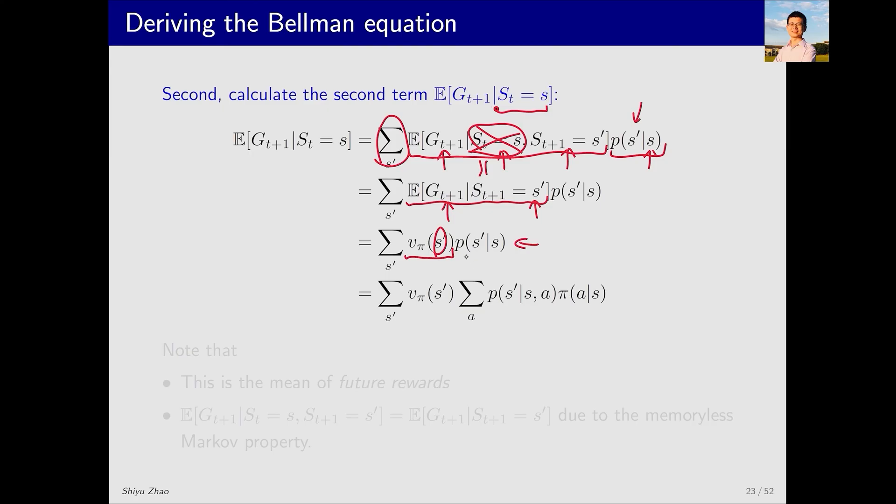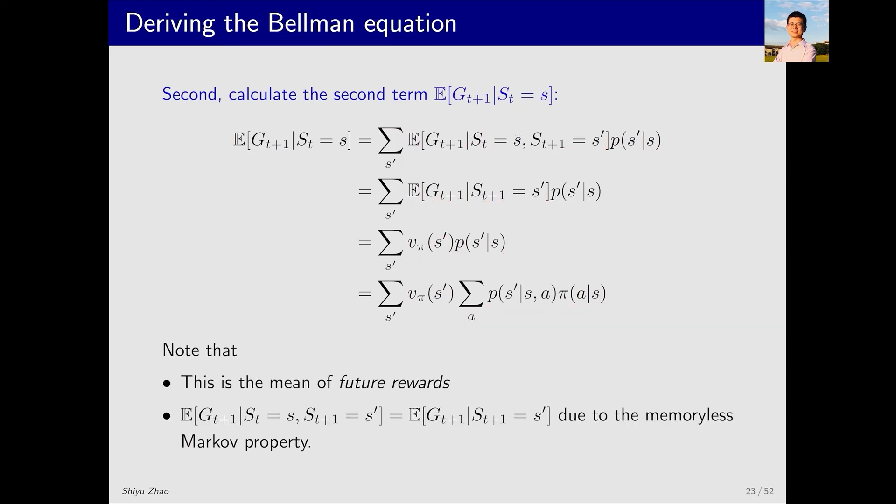Yet, we haven't calculated the probability of moving from s to s'. Starting from s, I can choose different actions. This is the probability of choosing this action. This is the probability of transitioning to s' upon choosing this action. Therefore, this sum equals the probability of transitioning from s to s'. In this part, we used many basics from probability theory. For those who are not familiar with probability theory, I recommend reading the appendix of my book. In summary, the second term is the expectation of future rewards. When calculating the second step, we can remove this due to the memoryless Markov property.